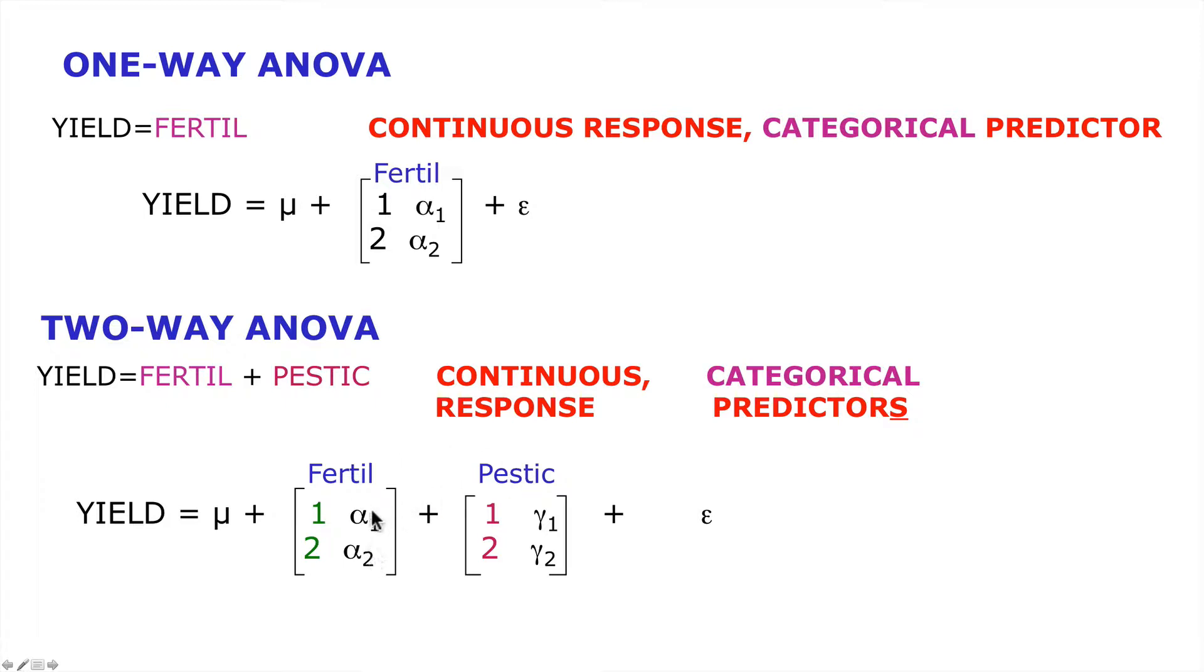And in this case we have two levels of this factor and two levels of this factor. Now this design can be expanded to consider subtle interactions between fertiliser and pesticide in its effect on yield. And the type of model it would be fitting in these instances would be a full model including interactions. However, we will leave interactions till a later lesson.